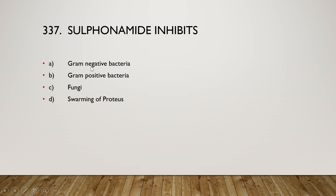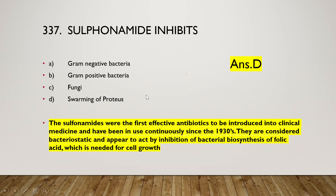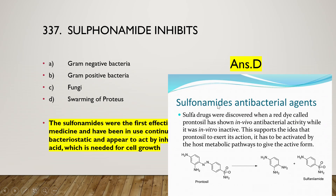Sulfonamide inhibits gram-negative bacteria, gram-positive bacteria, fungi, or swarming of Proteus? The right answer is option D — swarming of Proteus. Sulfonamides were the first effective antibiotics introduced into clinical medicine, in use since the 1930s. They are bacteriostatic and act by inhibiting bacterial biosynthesis of folic acid. Sulfonamide antibacterial agents were discovered when a red dye called Prontosyl showed in vivo antibacterial activity while being inactive in vitro, suggesting it requires activation by the host's metabolic pathway.